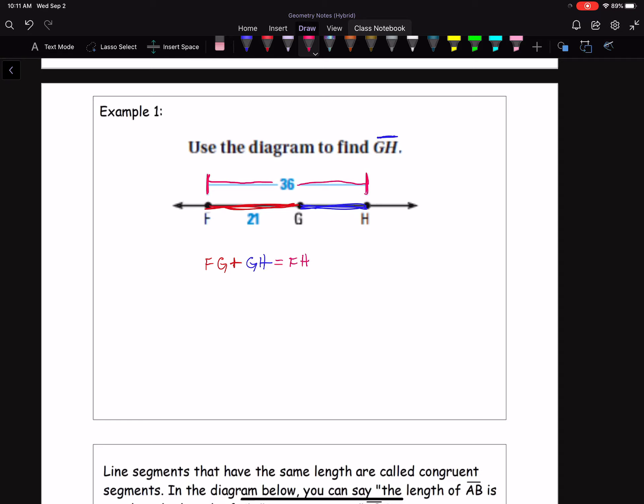So if I take FG, the first part, plus the second part, I get the entire line segment. So now we can fill in what we know. FG is 21, plus GH I don't know. So we can just leave it as GH, or you can call it X if you want, equals FH. The whole segment is 36. So 21 plus what is going to give me 36? You can treat it like an equation. We can subtract 21, or you can just use mental math.